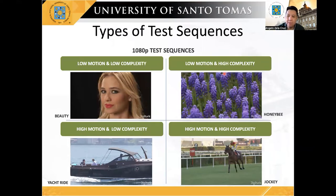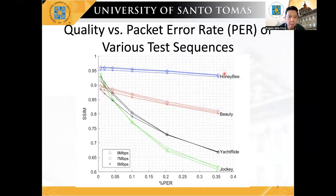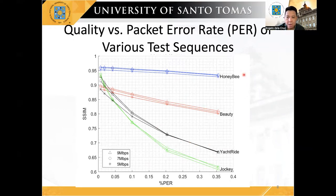Furthermore, the severity of end-to-end distortion is also dependent on the types of video sequences depending on the motion intensity and the texture complexity. Note that there are sequences like Yacht-Ride and Jackie that are greatly affected by the error introduced by the channel, while sequences like Honeybee and Beauty with low motion intensity are not significantly affected by the channel conditions.